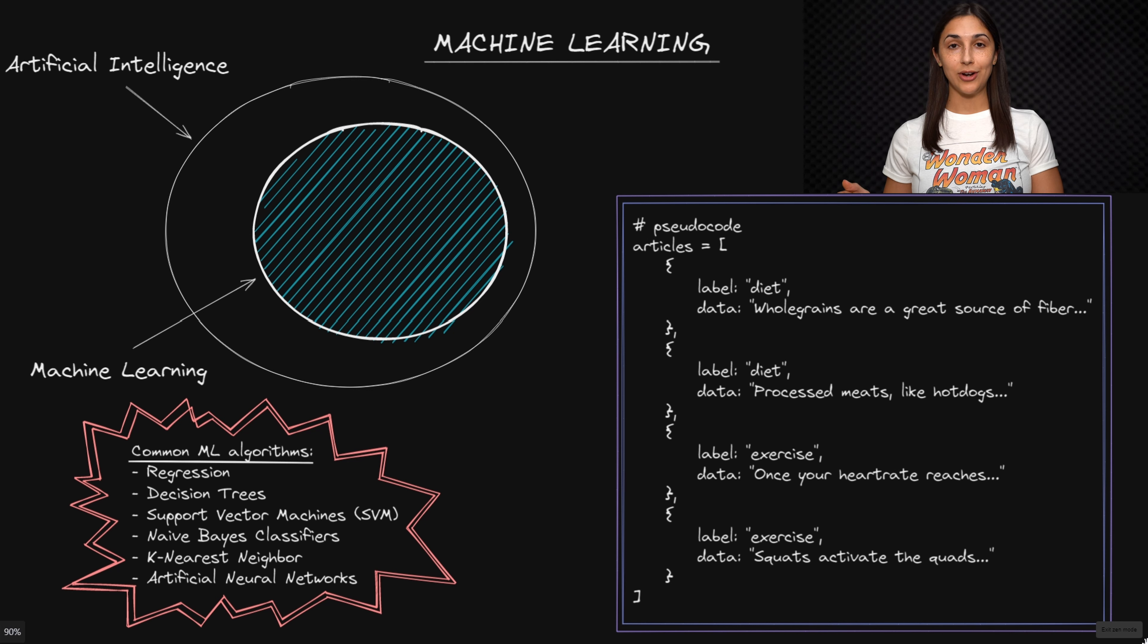With machine learning, on the other hand, the machine is instead trained using data and algorithms that give it the ability to learn from the data and make a determination about how to perform this specific task given what it learns. In other words, the machine learns how to do a given task rather than being given explicit instructions telling it exactly how to do so.